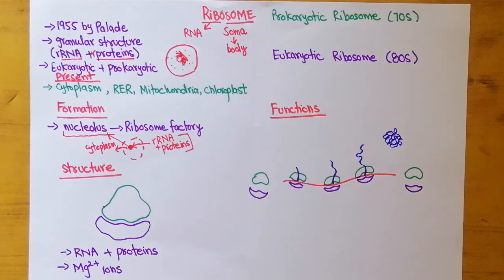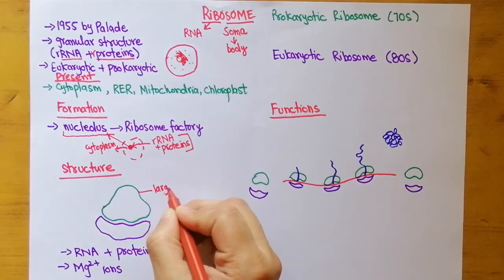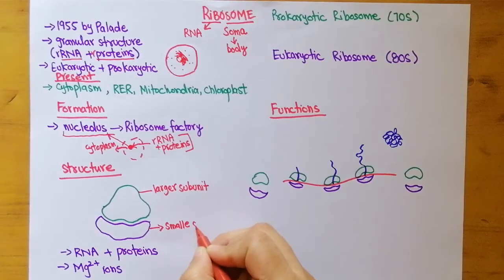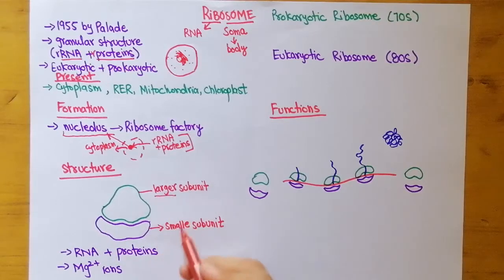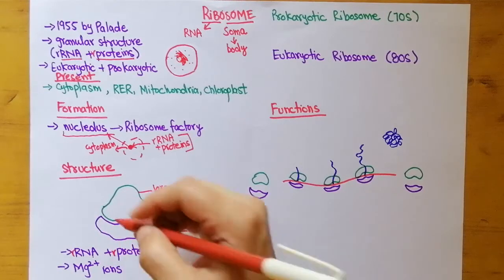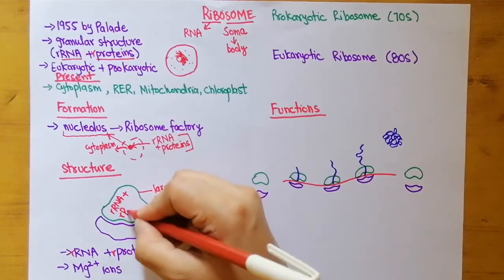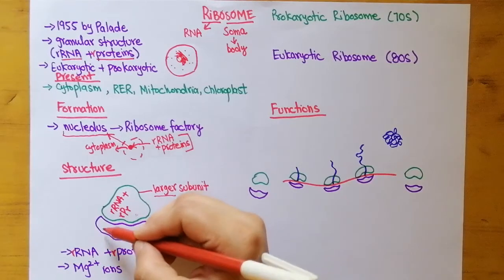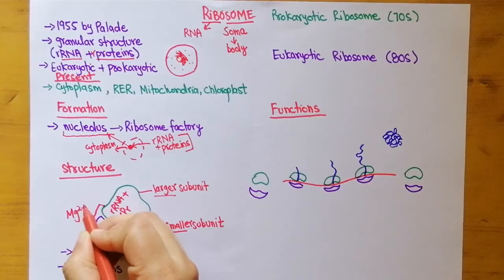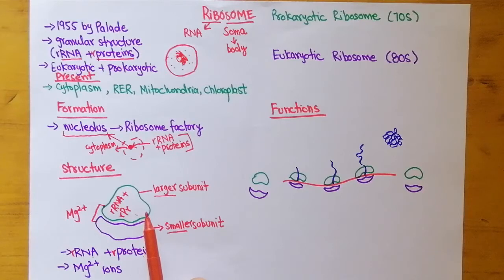If we talk about the structure of a ribosome, it is made up of two components or two subunits: one is known as the larger subunit and the other is known as the smaller subunit. These names are given based on their size. Each subunit contains ribosomal RNA plus ribosomal proteins. The smaller subunit and the larger subunit are attached to each other with the help of magnesium ions — the attachment is assisted by the presence of magnesium ions.